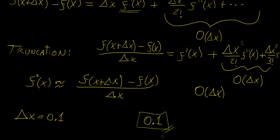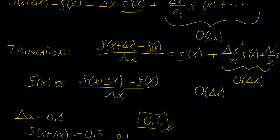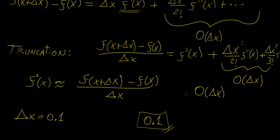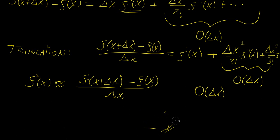So if you calculate a result like 0.5, the error in that would be around 0.1 — quite large if the step size is not small enough. You would need to make delta x much smaller to reduce the error. This big O notation doesn't give the exact error, but tells you the order of magnitude of the error in the approximation.